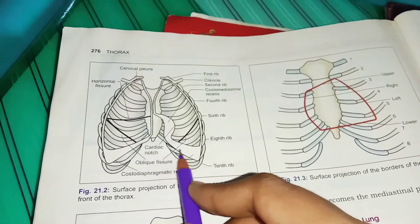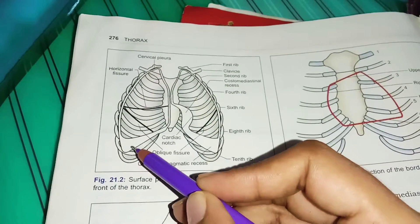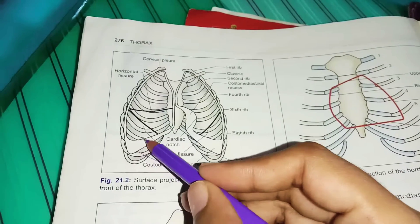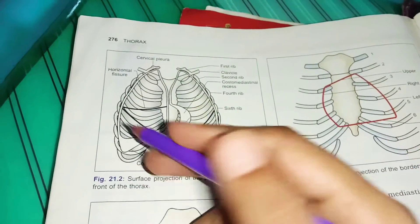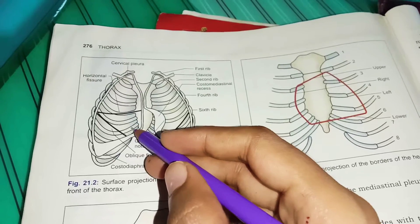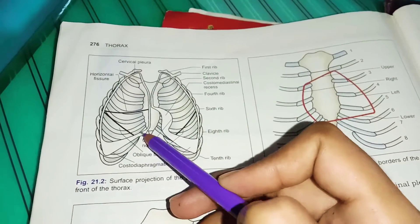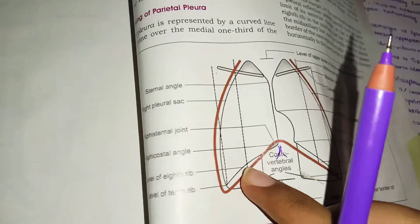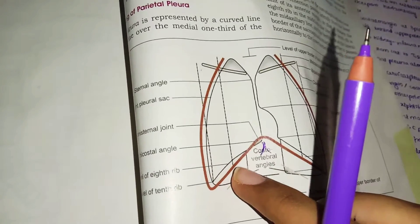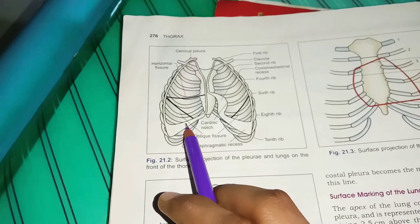The lower borders of each lung lie 2 ribs higher than the pleural reflection. For example, the lung crosses the 6th rib at the mid-clavicular line, whereas the pleura crosses at the 8th rib — so the lung is consistently 2 ribs higher than the pleura.